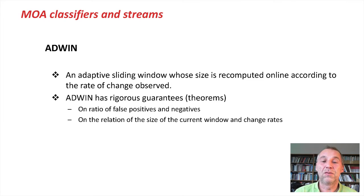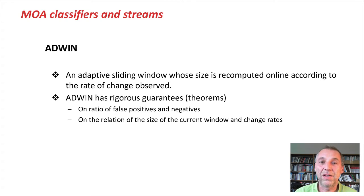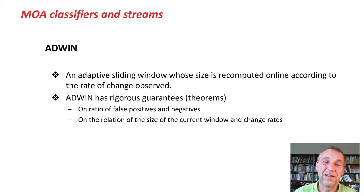But once there seems to be some change, we cut the window into two parts — the old part and the new part. The old part is discarded; the new part hopefully gives us the new correct mean. Now this is not just a heuristic algorithm — it comes with theoretical guarantees on the rates of false positives and false negatives, and on the size related to the rate of change. You don't have to worry about the size being too big, because internally it uses an exponential compression scheme.